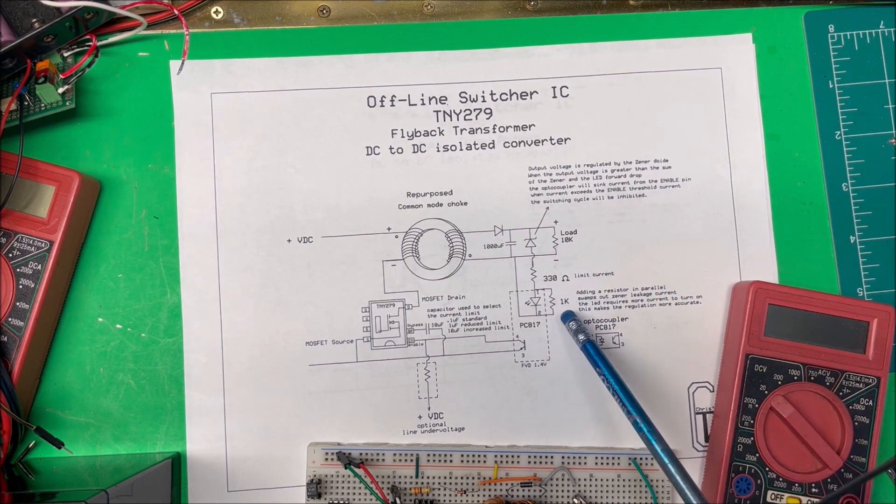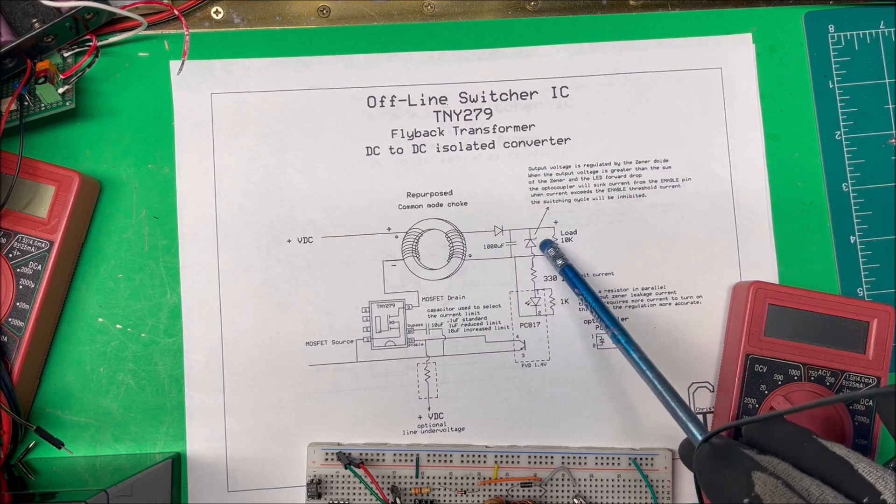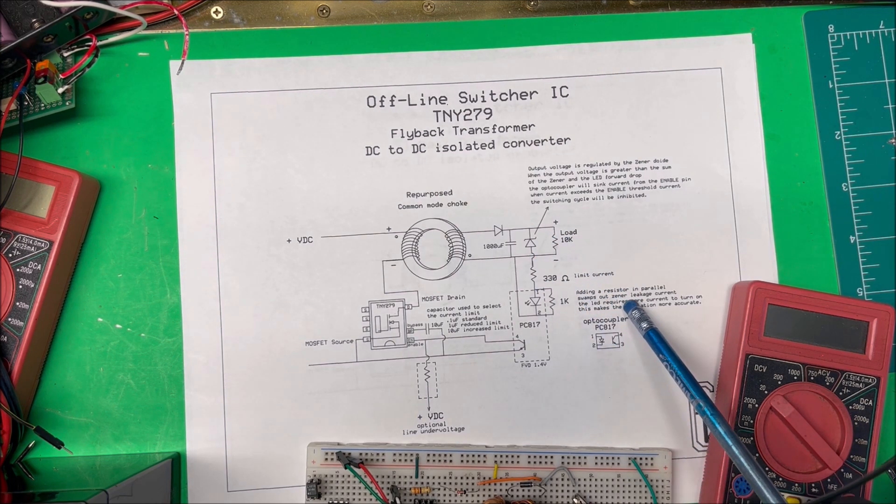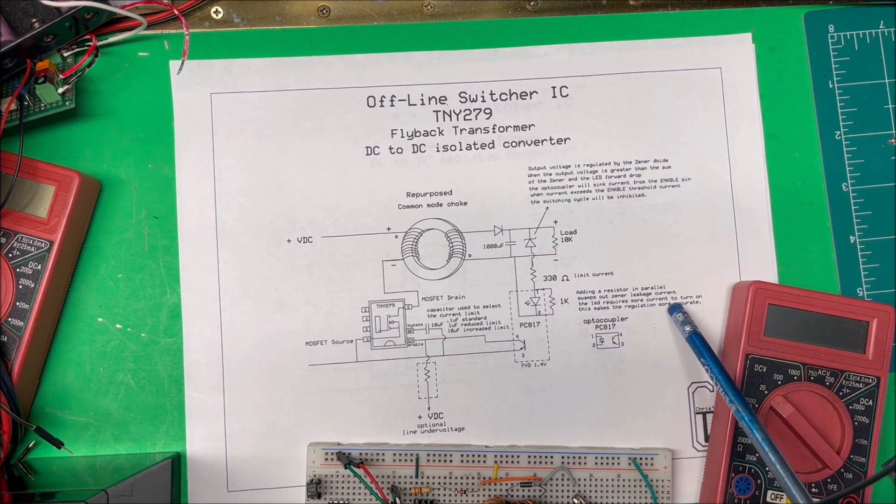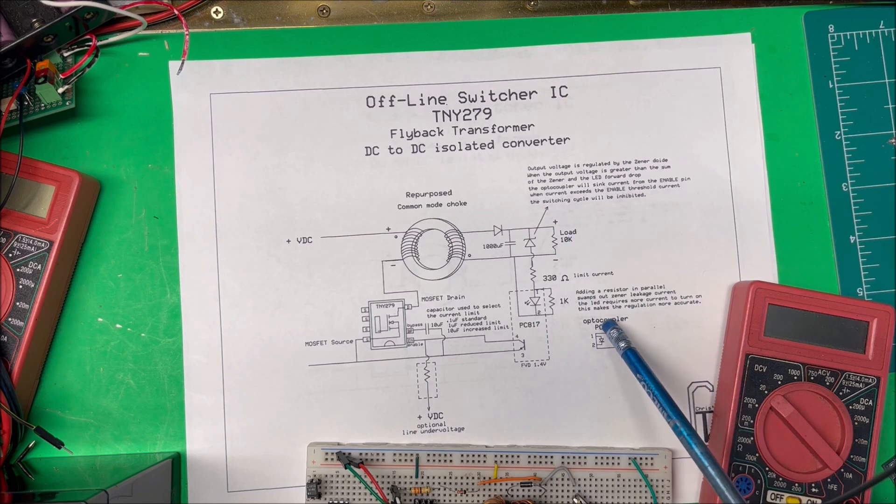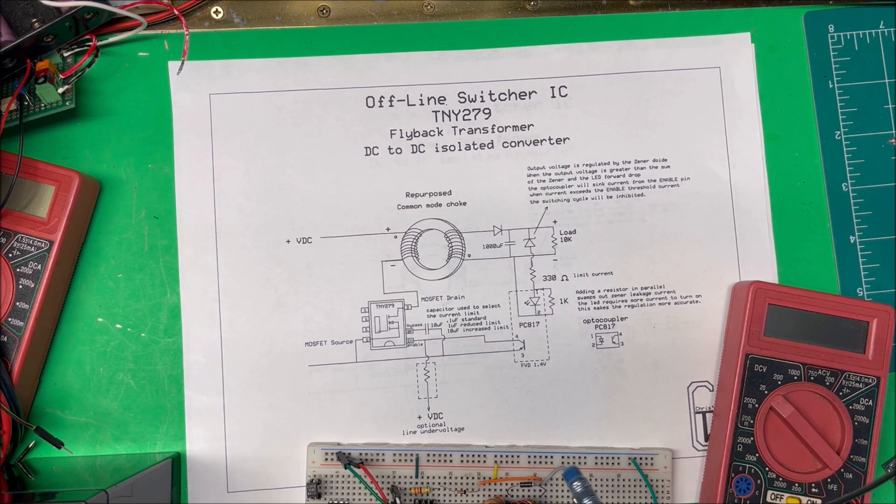Adding a resistor in parallel swamps out the zener leakage current. The LED requires more current to turn on, and this makes the regulation more accurate. In my case, I just left that out, but I can add that to increase the accuracy.